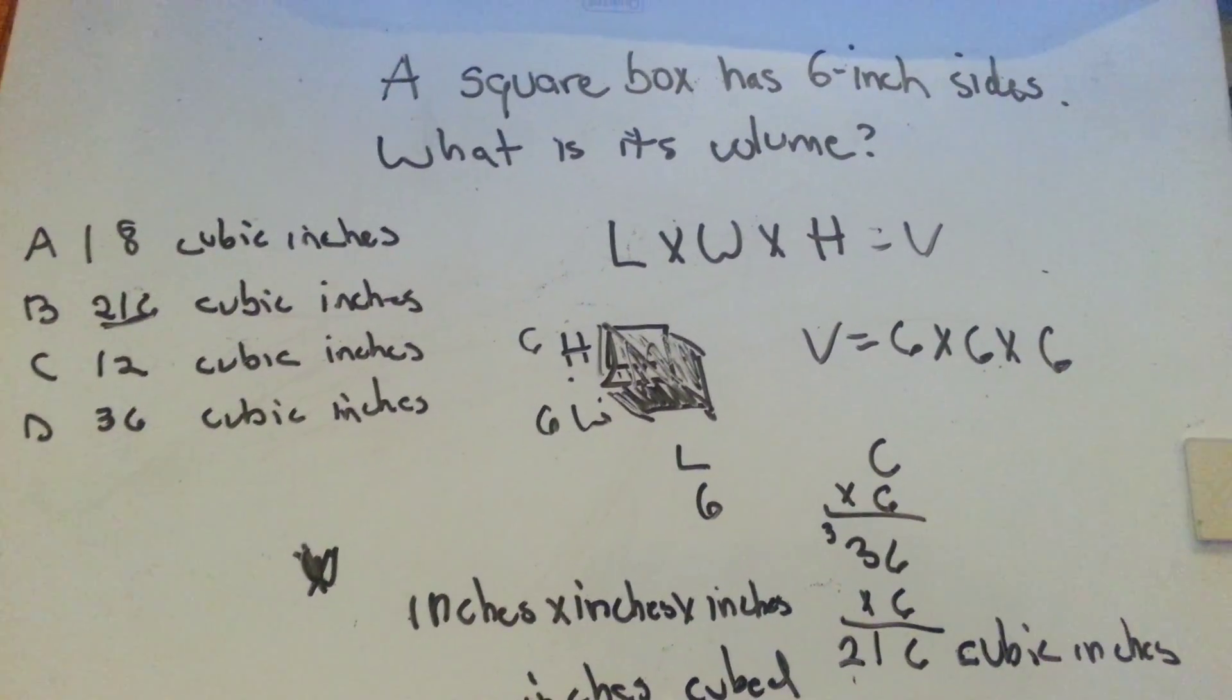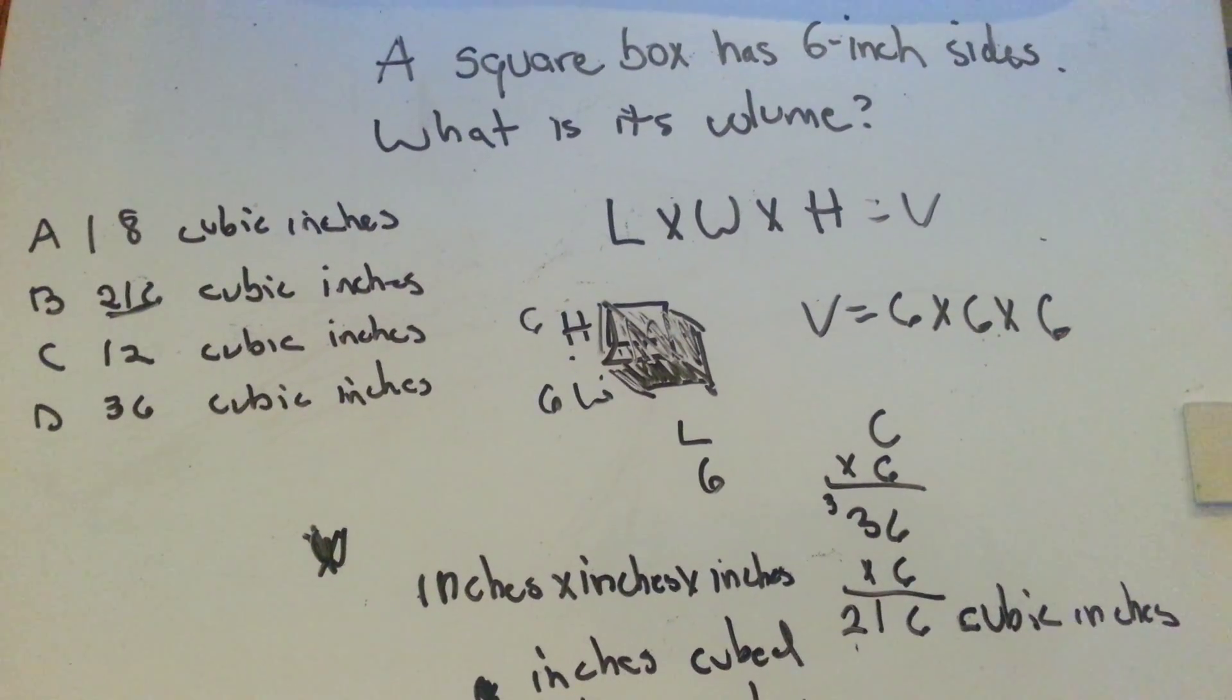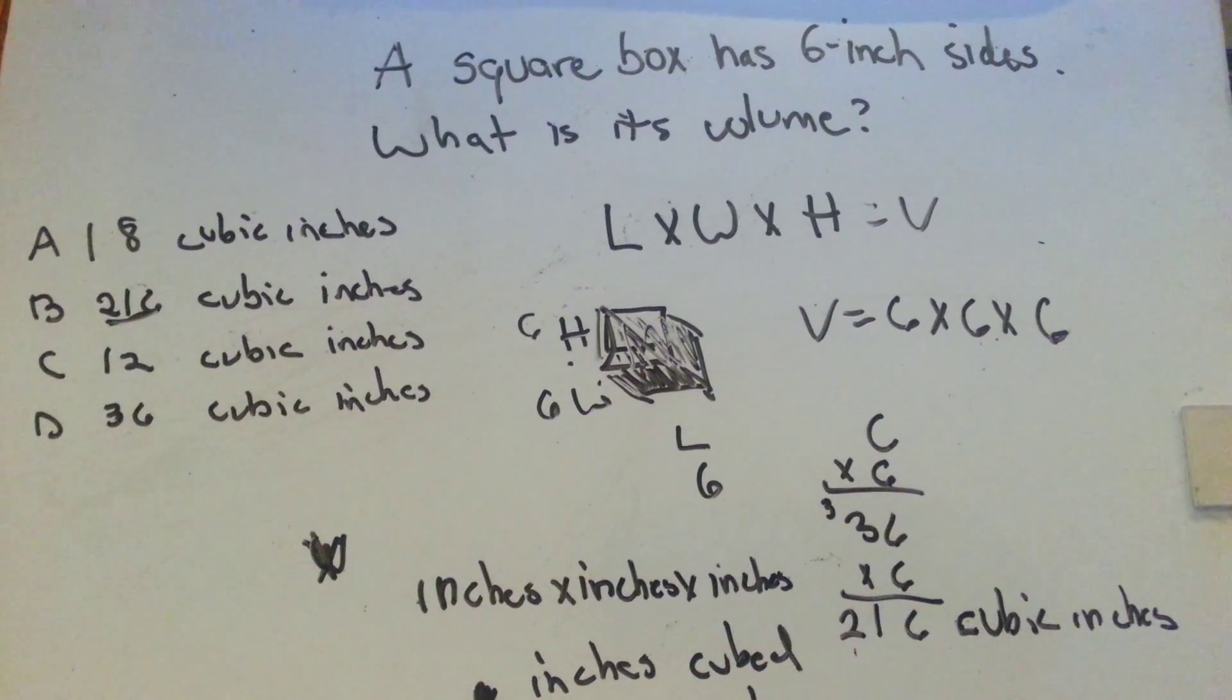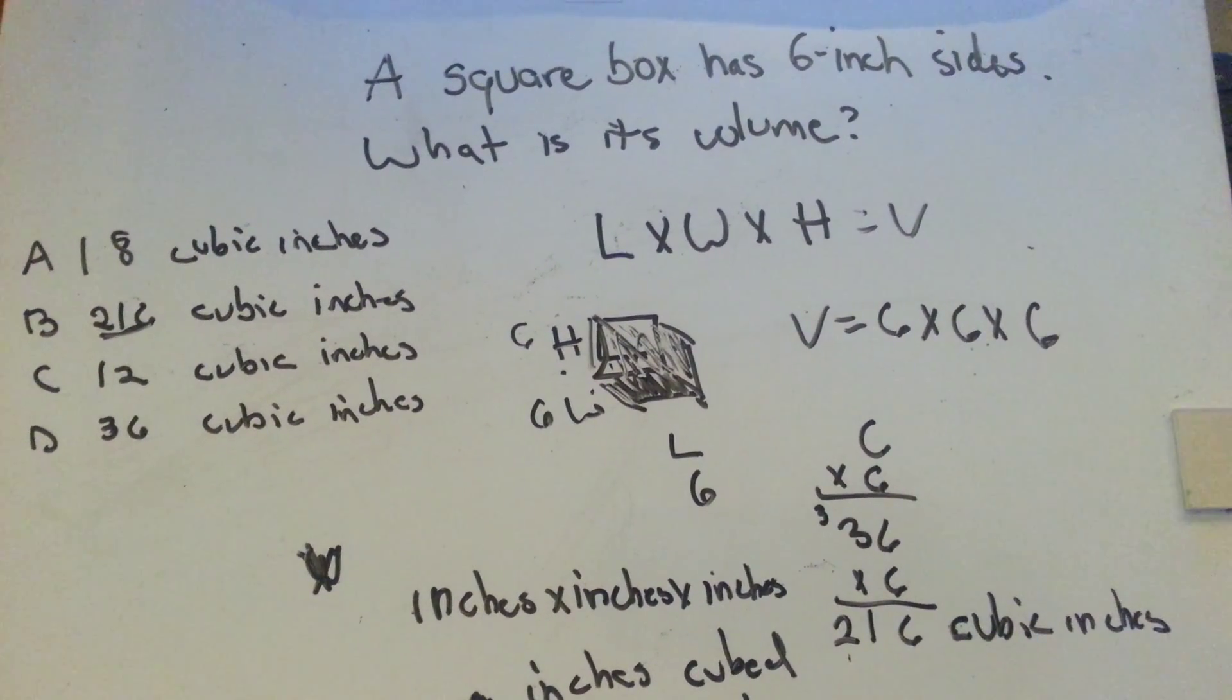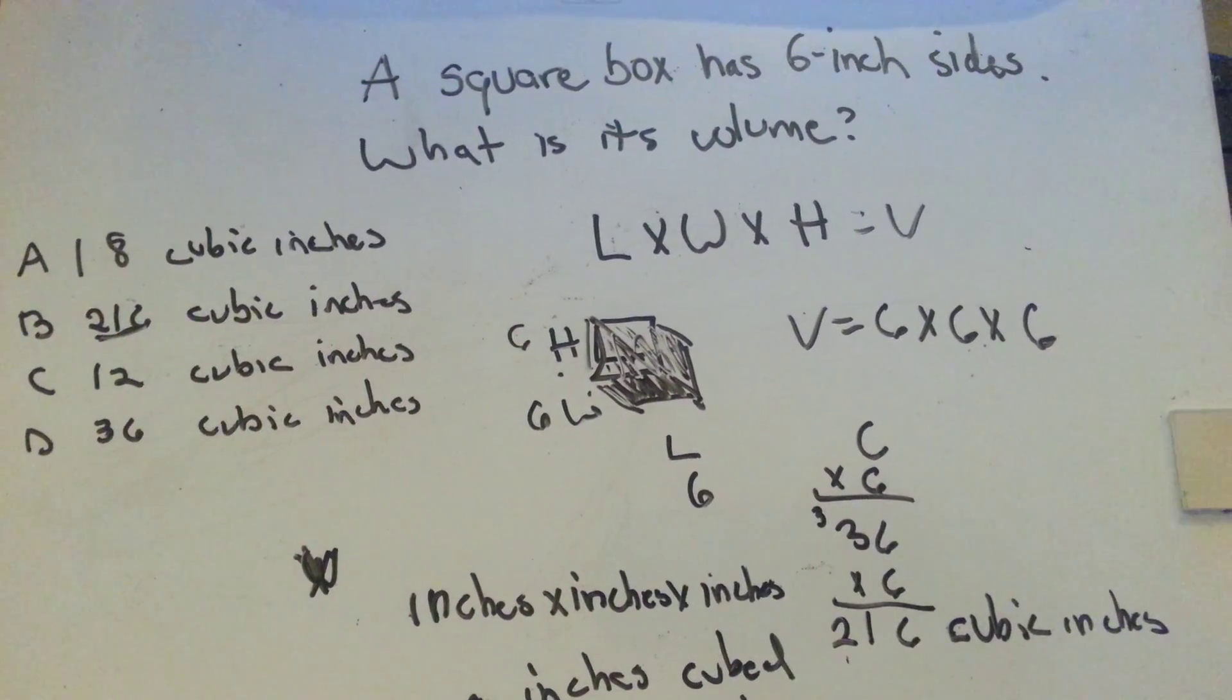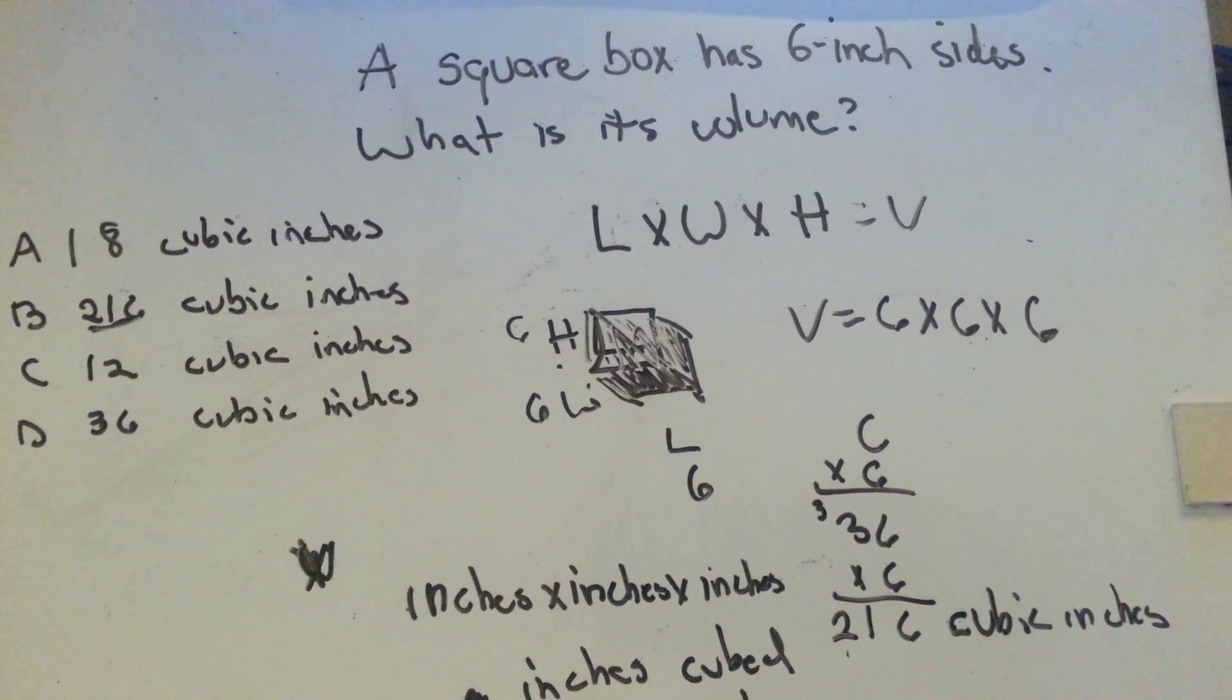So it's kind of a long explanation for how you get the answer and how to not get the wrong answer. So just remember that volume is the three sides, that's how long something is, how wide it is, and how high it is, and you have to multiply each of the sides together.